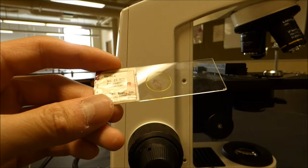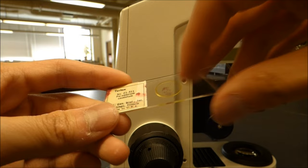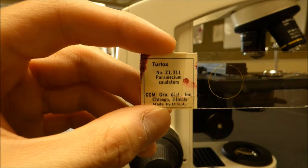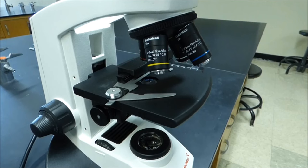Next, choose the particular specimen slide you will be using. You will most likely see a cover slip on the side the specimen is on. Again, in this particular demonstration we will be using a stained slide of some paramecium caudatum and focusing a specimen at 400x magnification.